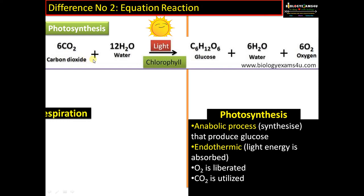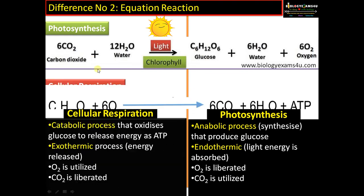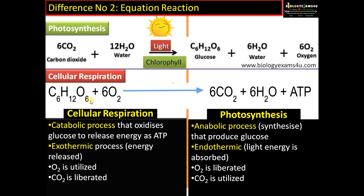In cellular respiration, this is a catabolic process — glucose synthesized during photosynthesis is oxidized or broken down into carbon dioxide and water, with the release of energy in the form of ATP that drives all cellular activities. This process is exothermic as energy is released. Oxygen, the byproduct of photosynthesis, is utilized here, and carbon dioxide, the reactant of photosynthesis, is released. So these two processes form a cycle — reactants of one become the products of the other and vice versa.